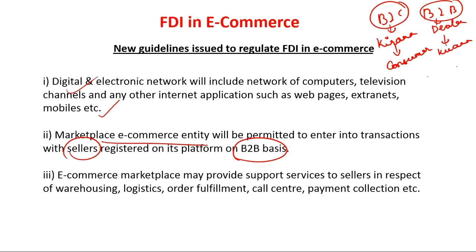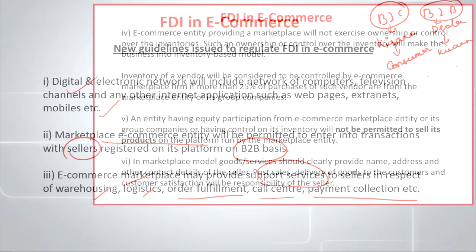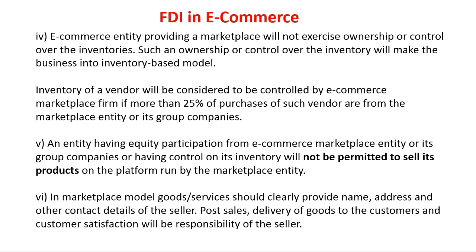The guidelines suggest that the e-commerce marketplace may provide additional support to sellers in order to enhance their consumer reach. These support services include warehousing, logistics, fulfillment of orders, call center services, payment collection, and more. With their huge capital and technological proficiency, e-commerce entities are expected to provide these services. Additionally, for the marketplace-based e-commerce model, the inventory should not be owned by the e-commerce entities — rather, individual sellers registered with the entity should act as the inventory holders. Any control over inventory would convert the marketplace entity to an inventory-based model.